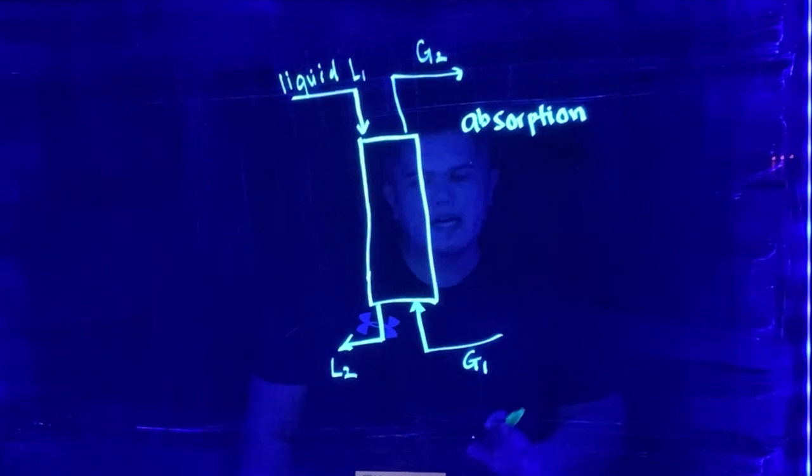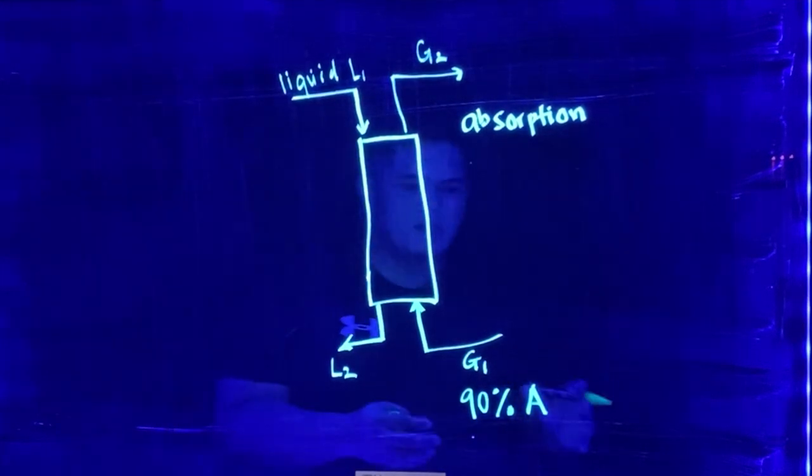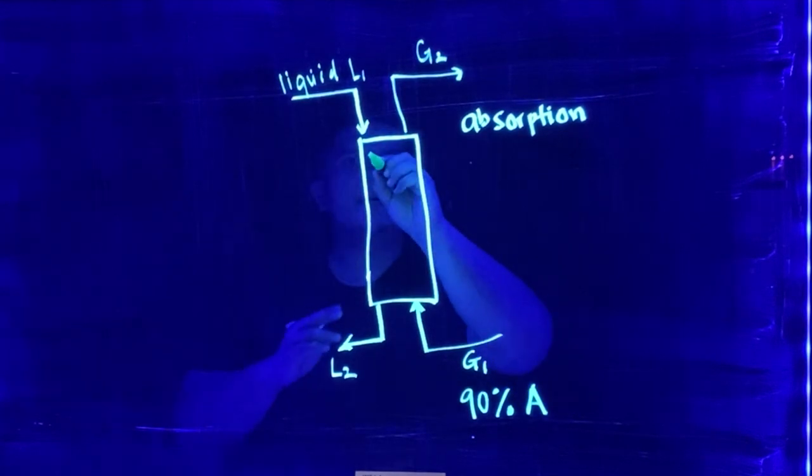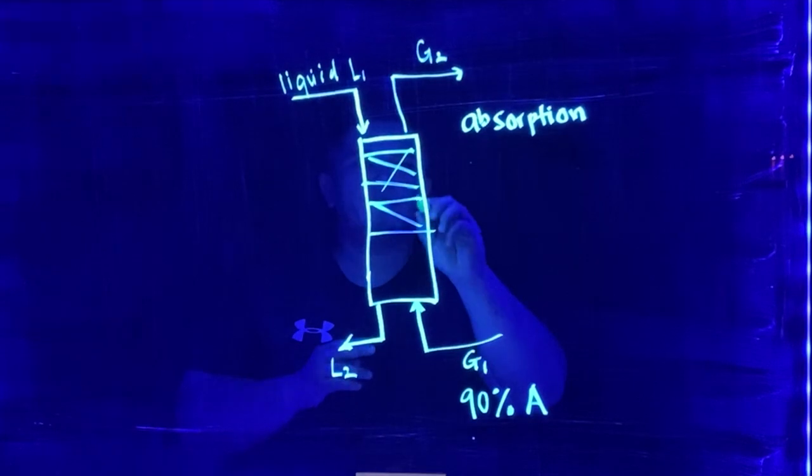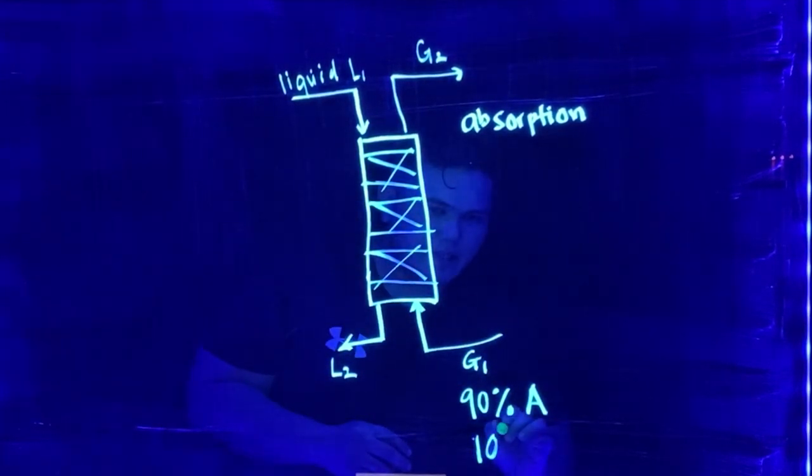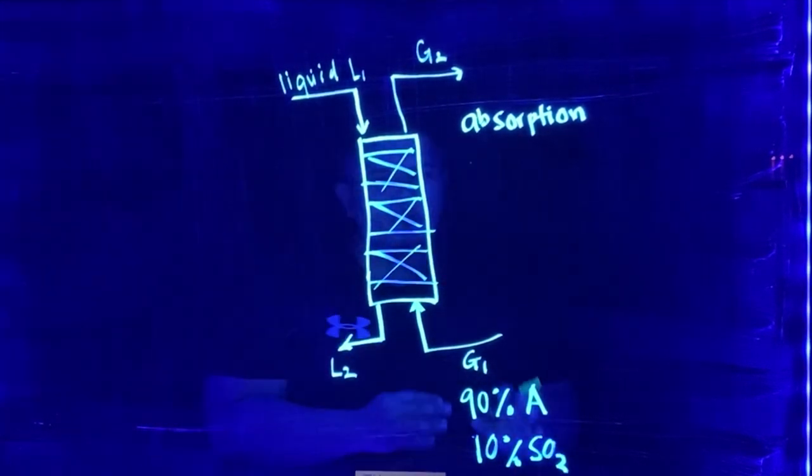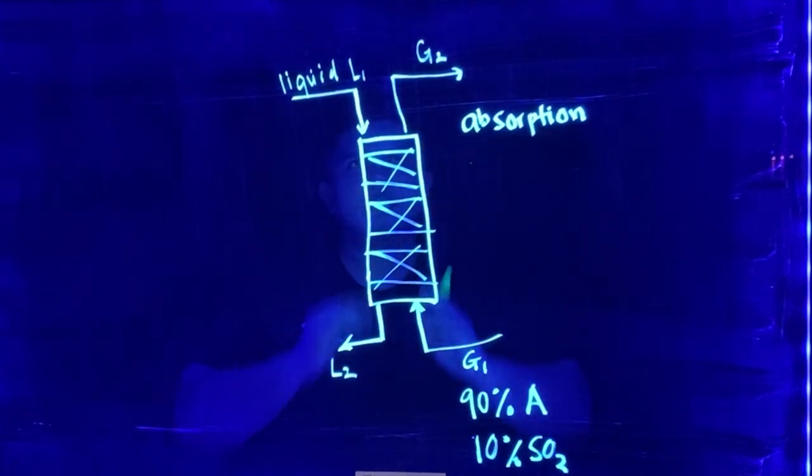So imagine that in the gas itself, it contains 90% of a species of gas A, which consists of many things, but it's not going to be affected by this absorption tower. But there is actually 10% SO2, which needs to be removed by using this absorption process.